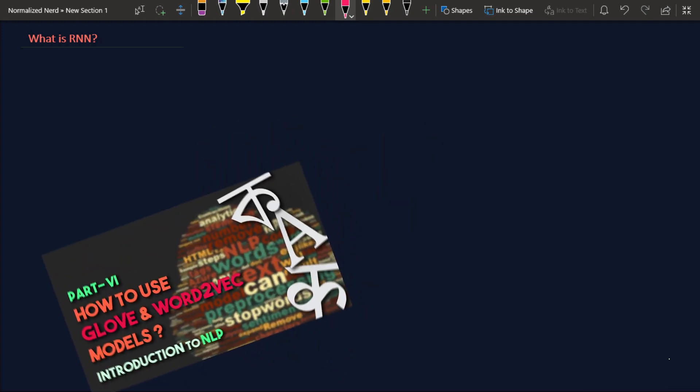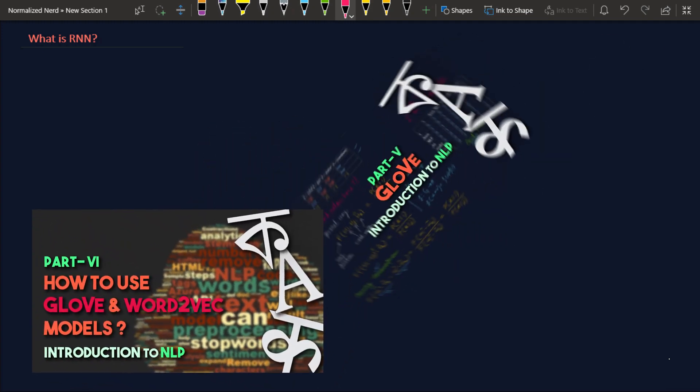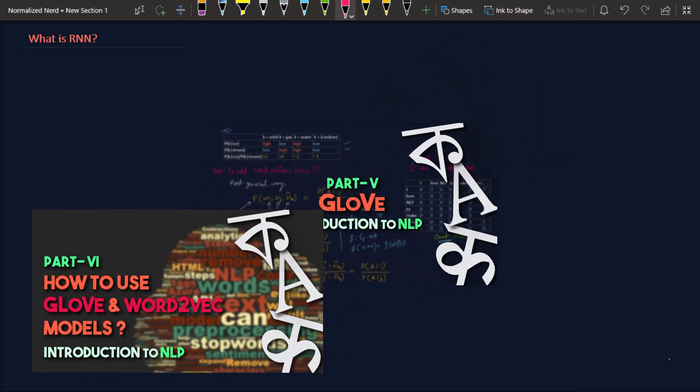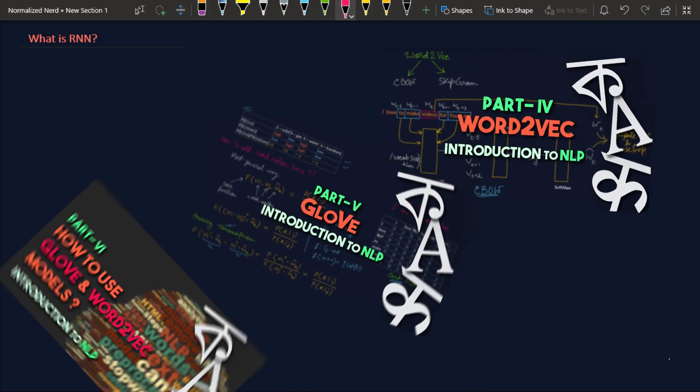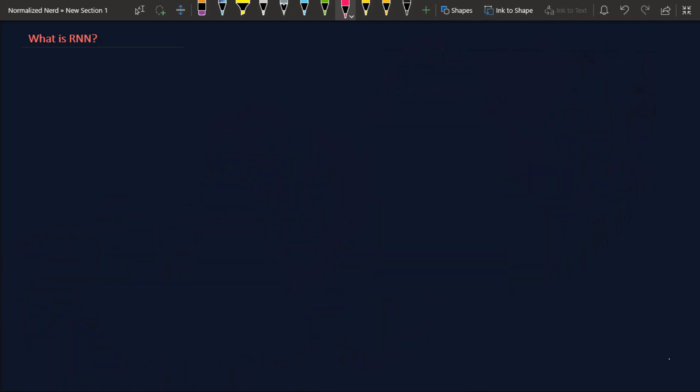In the last video I have shown you how you can implement Word2Vec model and GloVe model along with LSTM which is a kind of recurrent neural network. But I never really explained what an RNN is.